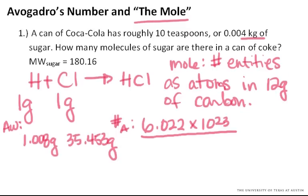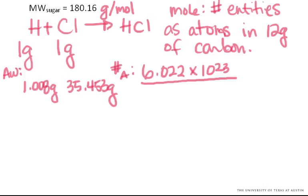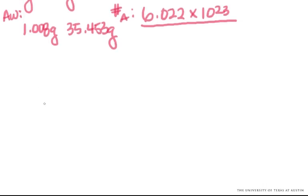So let's now look at this in the context of this problem, where you have a can of Coke, and it has 0.004 kilograms of sugar, and we need to find how many molecules of sugar there are in a can of Coke. And you're given the molecular weight of sugar, so one mole of sugar weighs 180.16 grams per mole. That's units for molar mass.